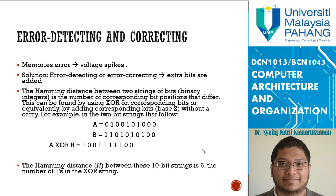Extra bits are added to find out which data is good or bad. The Hamming distance between two strings of bits is the number of corresponding bit positions that differ. This can be found using XOR on corresponding bits — equivalent to adding corresponding bits without a carry. For example, with two 10-bit strings A and B, the Hamming distance H is 6, because the total number of 1s in the XOR result string is 6.